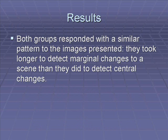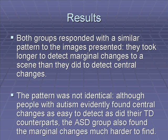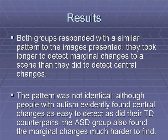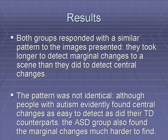The results indicated that both groups responded with a similar pattern to the images presented. They took longer to detect marginal changes than central changes. Although people with autism found central changes as easily as their typically developing counterparts, the autistic group also found marginal changes much harder to find.